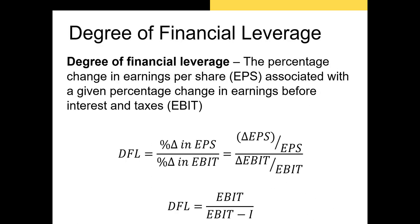The next measure of leverage is the degree of financial leverage. The DFL is the percentage change in earnings per share, or EPS, associated with a given percentage change in EBIT. All we have to do is calculate the percentage change in EPS divided by the percentage change in EBIT. We can also rearrange this formula to get EBIT divided by (EBIT minus I), where I is the interest expense in a given period. Both of these formulations give us our degree of financial leverage.